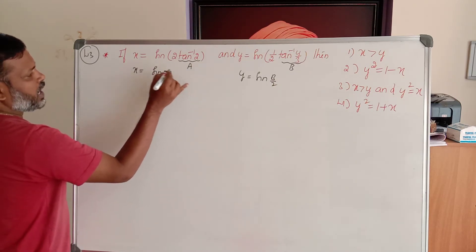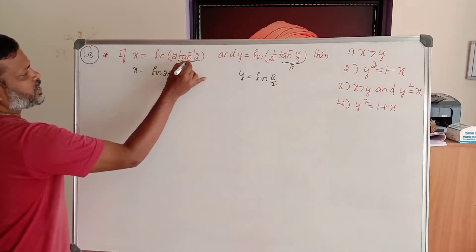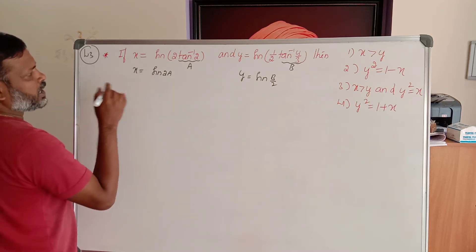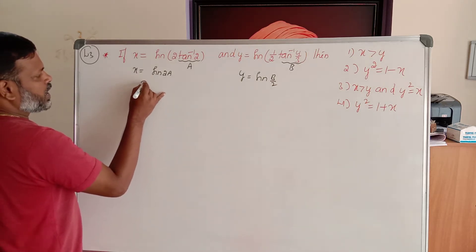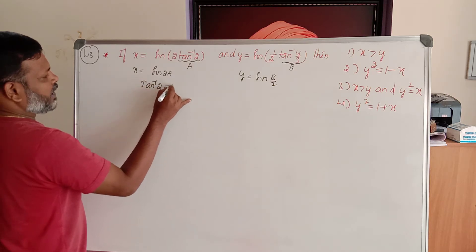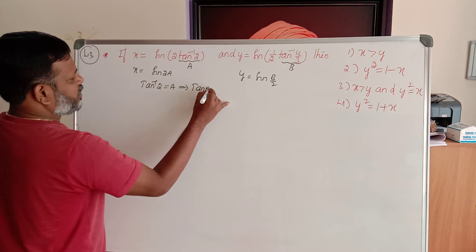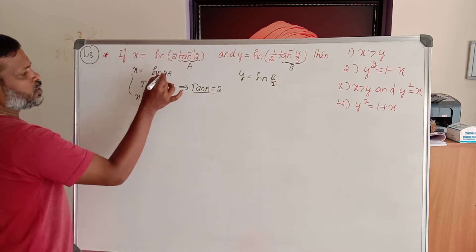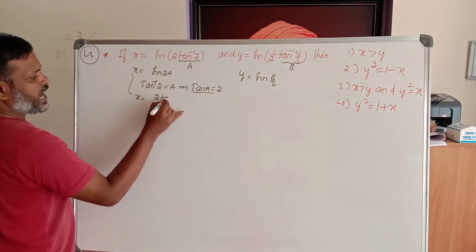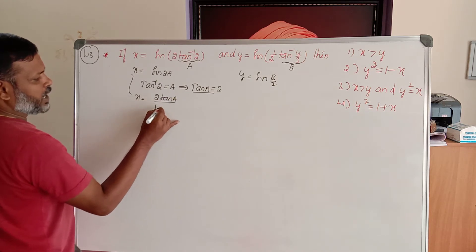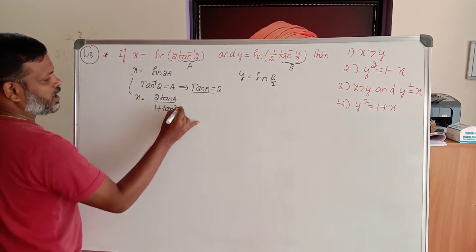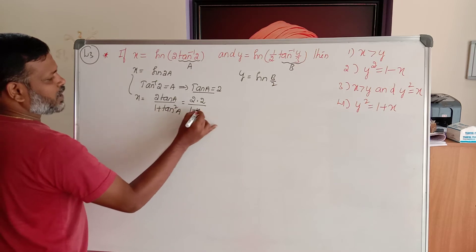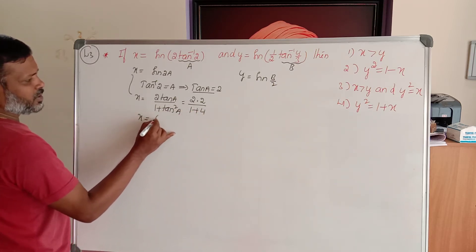Now, tan inverse 2 equals a, which implies tan a equals 2. So x equals sin of 2a. Using the formula, sin 2a equals 2 tan a divided by 1 plus tan square a. That gives 2 times 2, which is 4, divided by 1 plus 4, which is 5. Therefore, the value of x is 4 by 5.